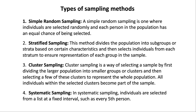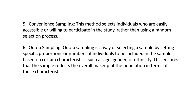In systematic sampling, individuals are selected from a list at a fixed interval, such as every fifth person. Convenience sampling selects individuals who are easily accessible or willing to participate in the study, rather than using a random selection process.